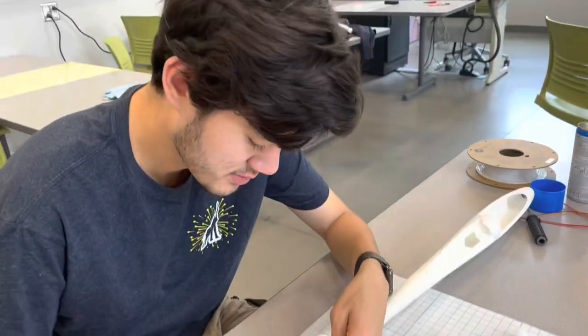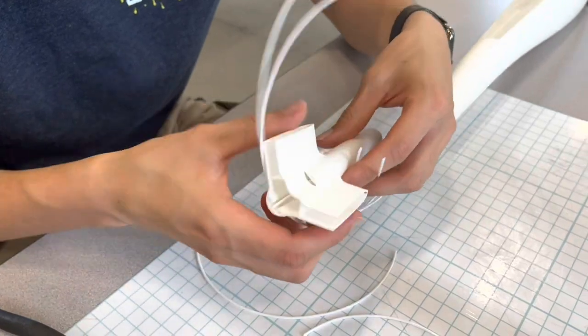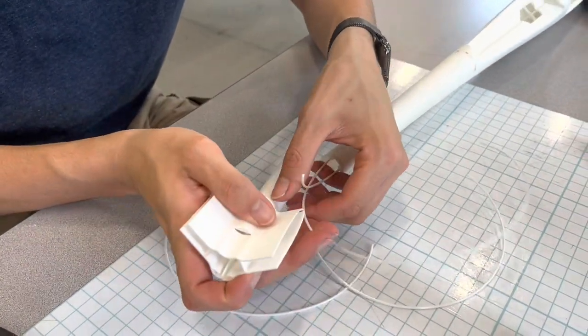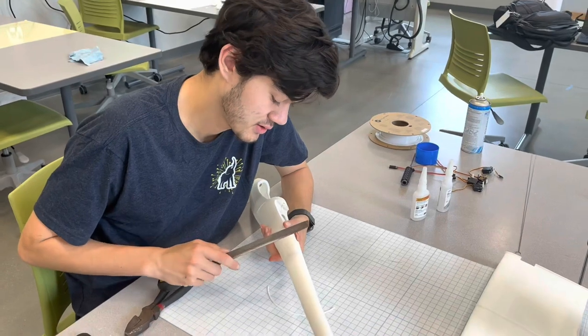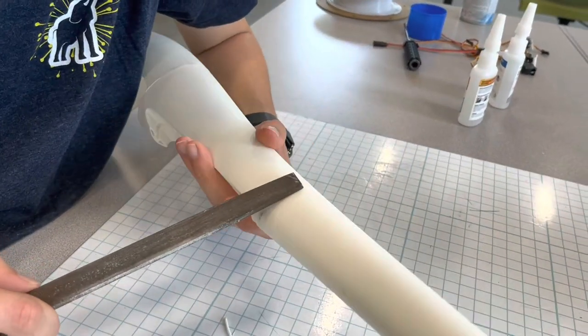We are going to match the rod to the length of the fuselage. So the bottom ones are going to go the full length and stick out these holes, and the top ones need to be cut shorter so they end right about here. I'm going to file down the glue joints on the fuselage for extra cosmetic pleasure.